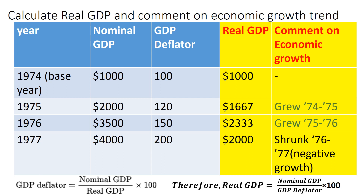Now let's see what happened between 1976 and 1977. In 1976, real GDP was 2333, but in 1977 real GDP was only 2000, which is less than the previous year. So the comment here is: the economy shrunk from 1976 to 1977 — there was negative growth for that year.